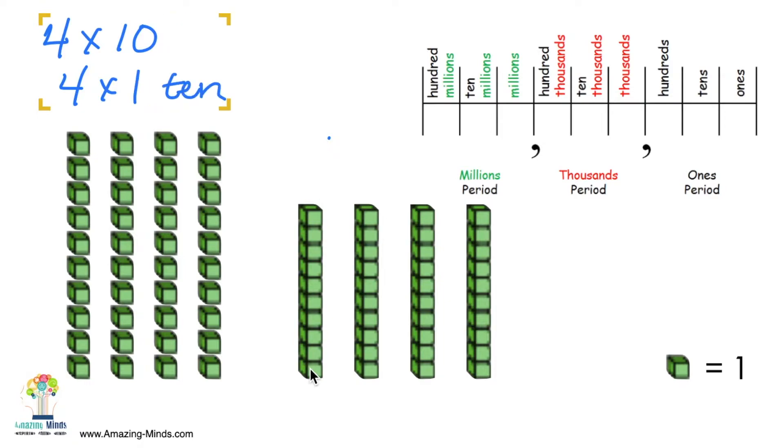And so you get 4 tens as your answer. And what is happening is the 4, you still have 4 of something, but instead of 4 ones, you now have 4 tens.